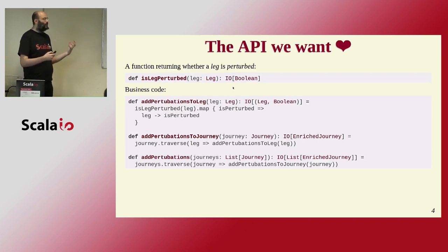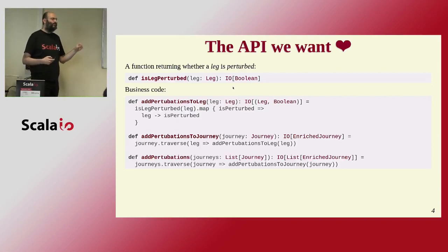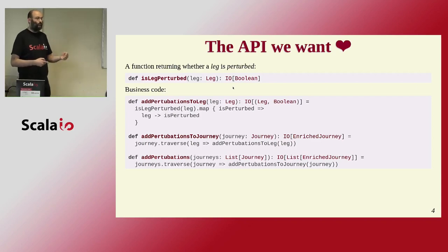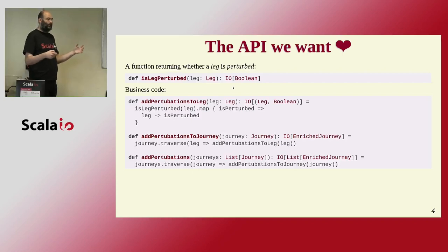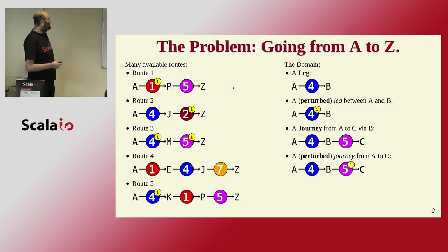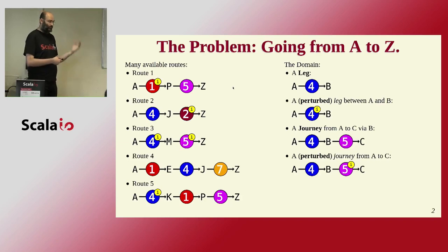That's what we want. When we started speaking about the feature, we asked the business whether their upstream service had implemented it that way — that would have been very nice. So if we add this function, what could we do? For every journey, I apply a traverse — that's just like a map but for IO — and add the information to every journey. For each journey, which is a list of legs, I apply the transformation to every leg. For a leg, I call this function. What we want is to apply 'isLegPerturbed' to every leg: if false, we don't show an eye; if true, we show an eye.